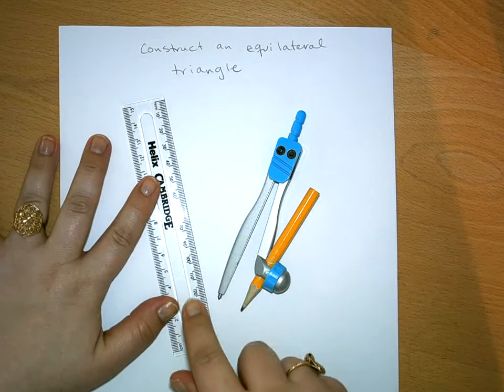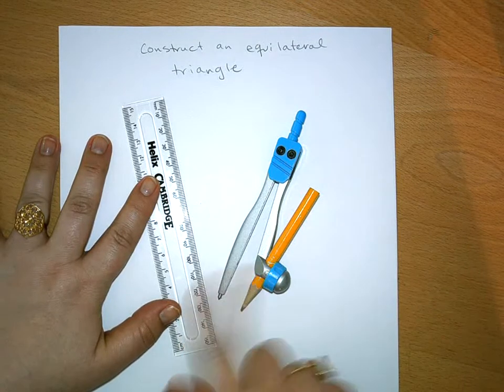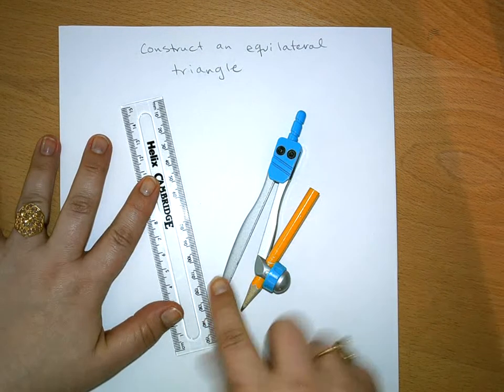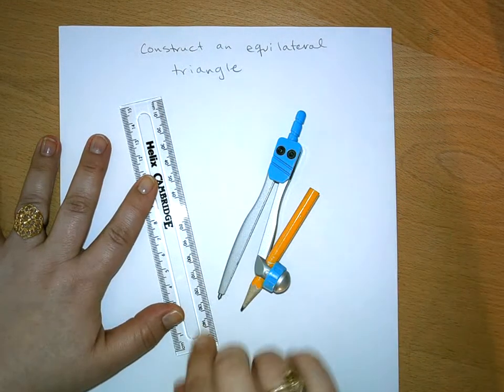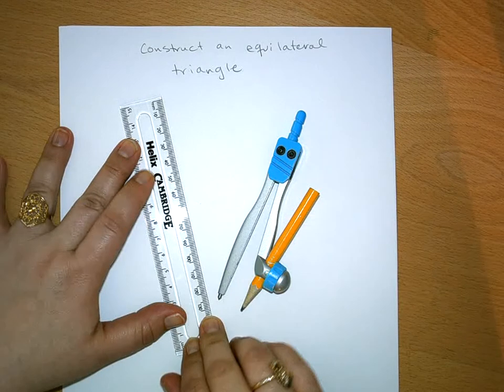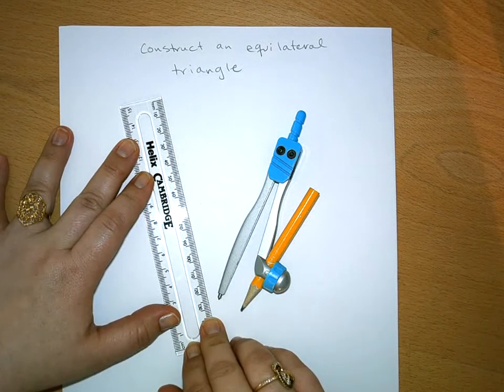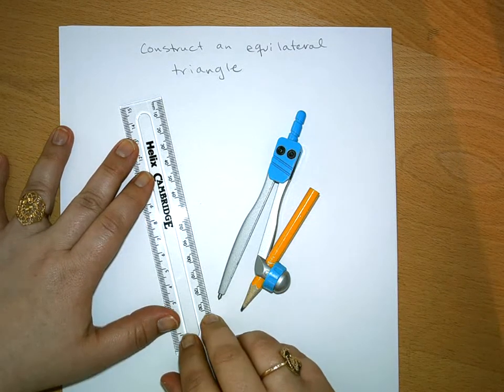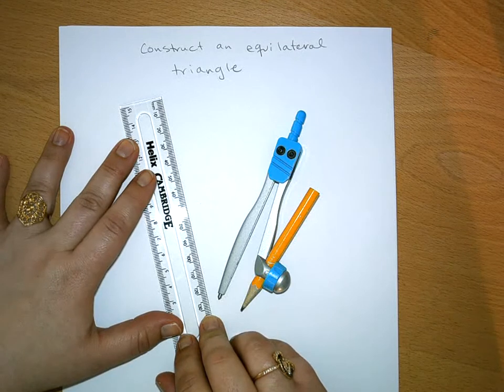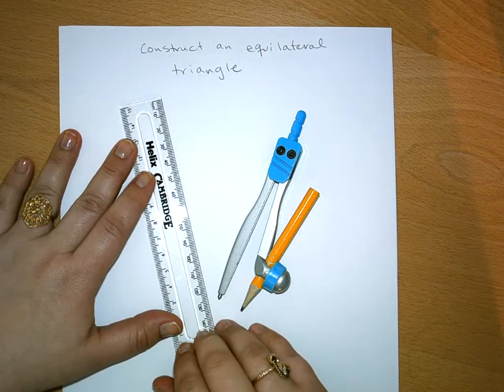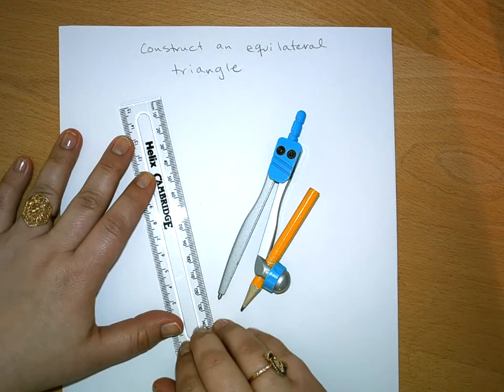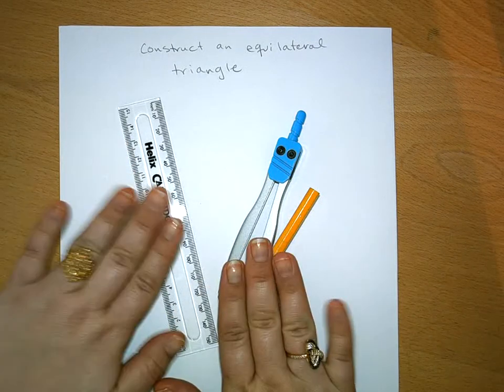And whenever we're using these tools for constructing, we do not use the measurements. I'm just using the straight edge. And that is because these constructions are made to prove all the properties, some axioms, and some postulates of geometry just by using these math tools.